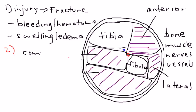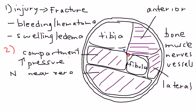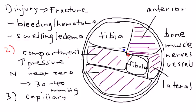That's step two: these compartments develop increased pressure. Normally the pressure in these compartments is near zero. As time goes on, the pressure rises. The problem is that the capillaries normally responsible for perfusing the tissue and muscles only have a pressure of eight. Once the compartment pressure exceeds the capillary pressure, you have a severe problem — the cells don't get perfused.